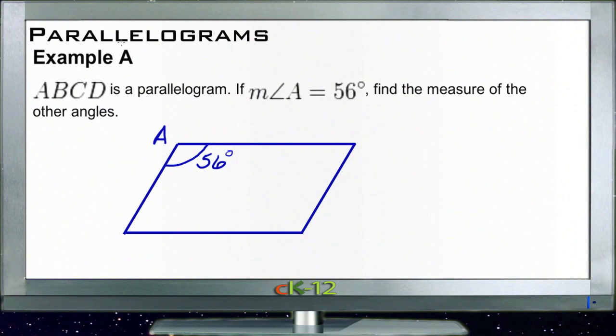Alright, let's work on the example problems for parallelograms. Example A tells us that ABCD, oops, forgot to label the other vertices here, ABCD is a parallelogram, and says if the measure of angle A is 56 degrees, find the measure of the other angles.